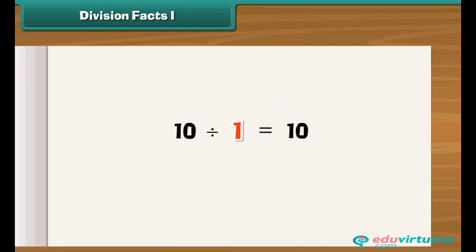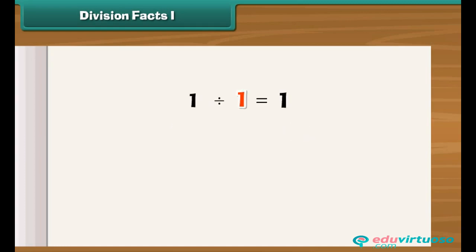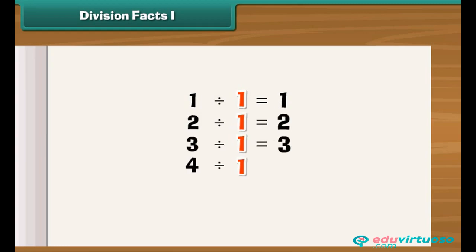When a number is divided by one, the result is the number itself. One divided by one is one. Two divided by one is two. Three divided by one is three, and so on.